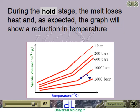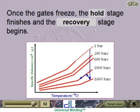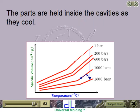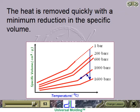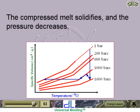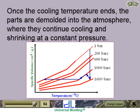During the pack stage, the melt loses heat and the graph shows a reduction in temperature. Once the gates freeze, the pack stage finishes and the plastification stage begins. The parts are held inside the cavities as they cool, with heat removed quickly and a minimum reduction in specific volume. The compressed melt solidifies and the pressure decreases. Once the cooling time ends, the parts are demolded into the atmosphere, where they continue cooling and shrinking at a constant pressure.